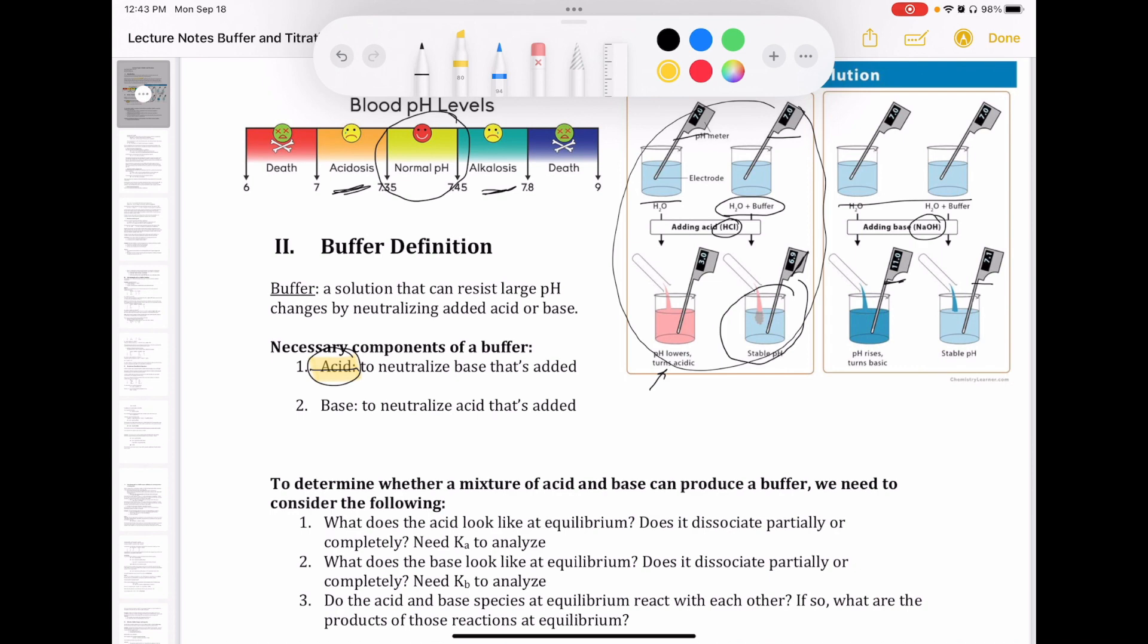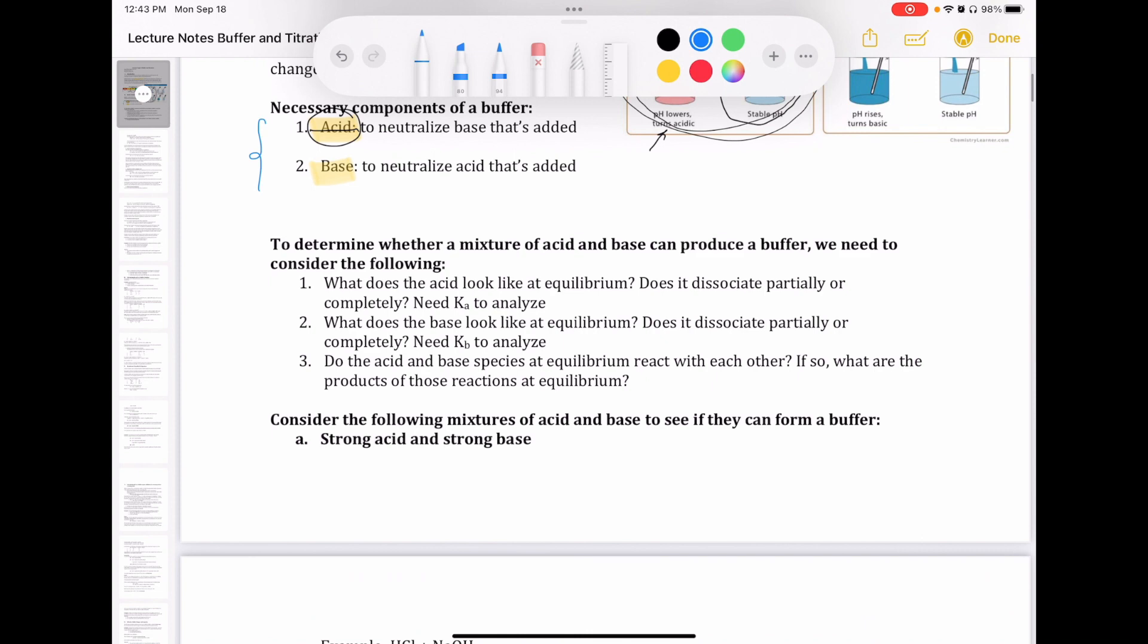Similarly, if I'm adding HCl, just like in the picture I showed here, I'm going to need something to neutralize that HCl, so I'm going to need a base. So in other words, my buffer solution has to have two components in it. It has to have an acid, and it has to have a base. And they both serve a function to neutralize whatever it is that I'm adding.